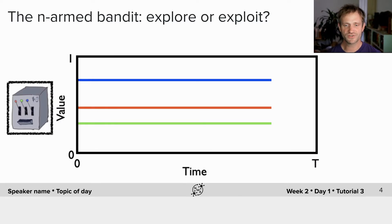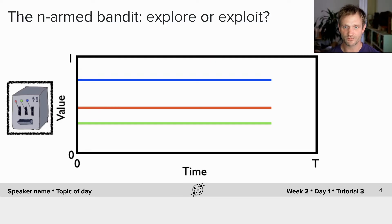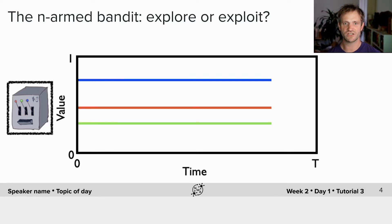We normally study this using something called an n-armed bandit. It's an analogy to going to a slot machine where you have a bunch of one-armed bandits, and you get to pull each of the slot machines — sometimes they're better, sometimes they're worse. Let's imagine a machine that has multiple arms: blue, red, and green.